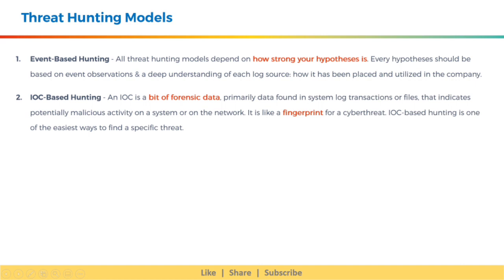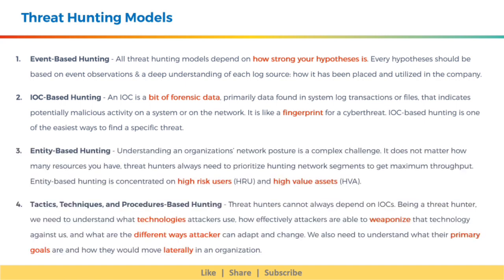Next, we have IOC-based hunting. An IOC is a bit of forensic data, primarily data found in system log transactions or files, that indicates potentially malicious activity on a system or on the network. It is like a fingerprint for a cyber threat. IOC-based hunting is one of the easiest ways to find a specific threat.